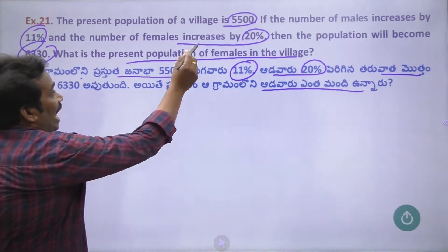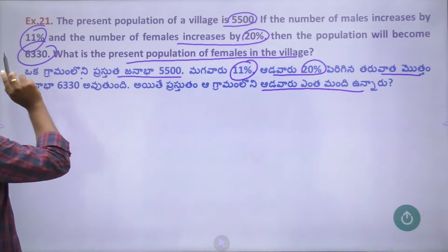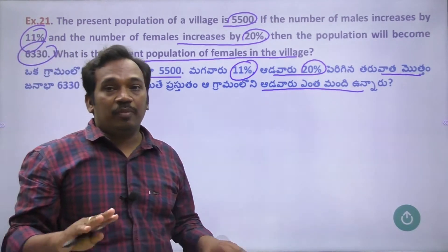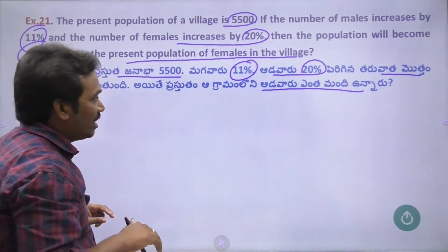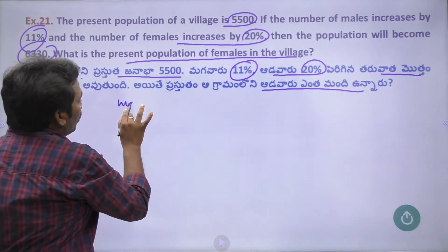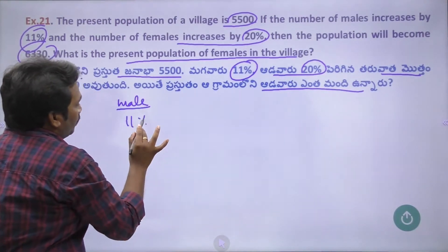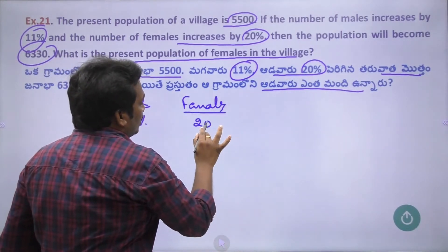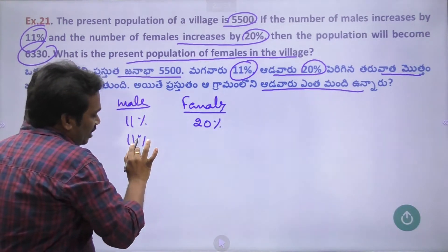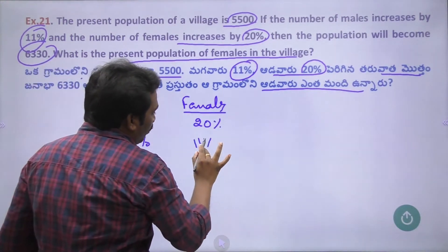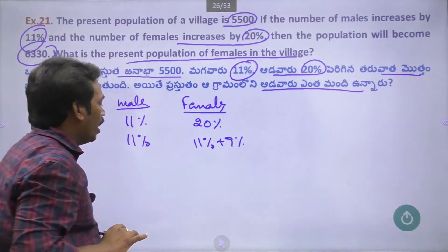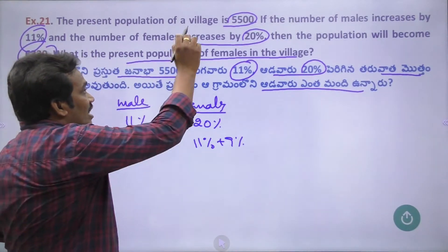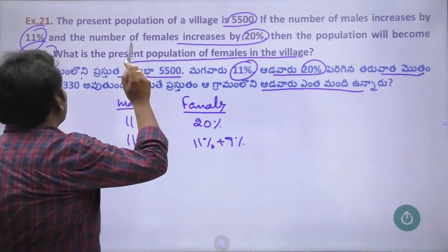Now, what is the present population of the females? Females increase by 20%, and males increase by 11%. So males are 11% and females are 20%. What is the 11% increase?